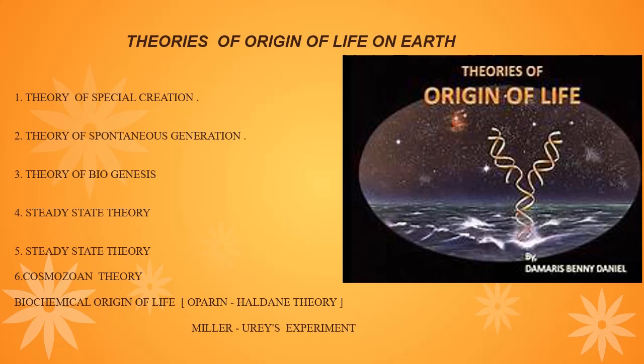Number one, theory of special creation. Number two, theory of spontaneous generation. Three, theory of biogenesis. Four, steady state theory. Five, cosmic theory. Six, biochemical origin of life. In this video, we will discuss about biochemical origin of life which was given by Oparin and Haldane and it was proved by Miller and Urey, and thus it is called Miller-Urey's experiment.